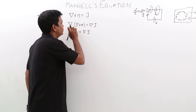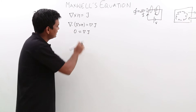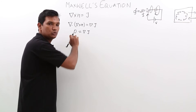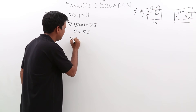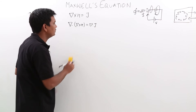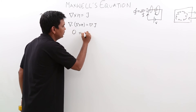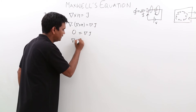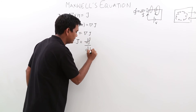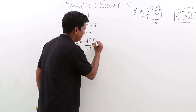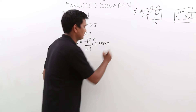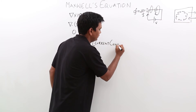So the divergence of curl would be zero. But can I say this equation del cross H equals J is correct? No. Because del dot J is not equal to zero. We have already studied this — del dot J is equal to minus d rho_v by dt, from the current continuity equation. So this equation is not correct.